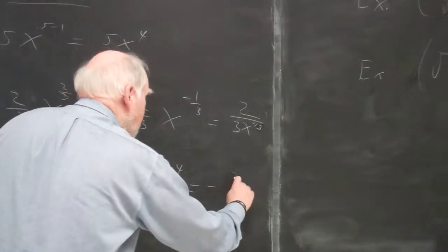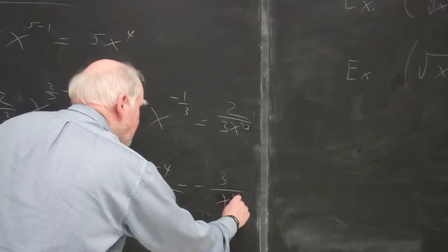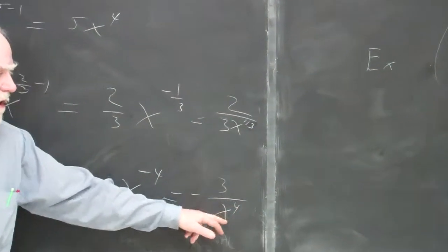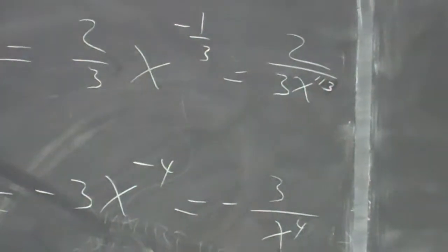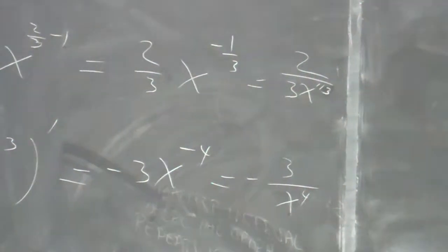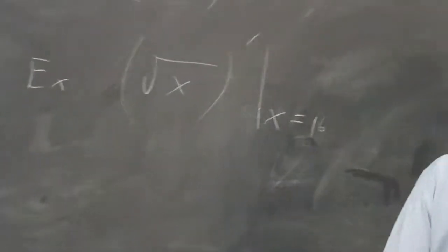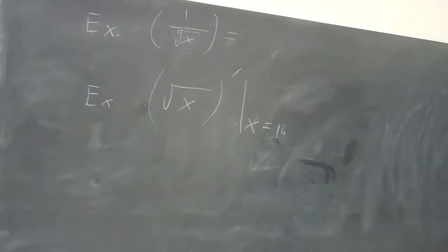You might want to put that x downstairs, and it becomes positive. If you bring a negative exponent from the numerator down to the denominator, it becomes positive, and vice versa. So that's a little better form. I urge you to stop the video and go back, because I'm going through these as fast as I can.